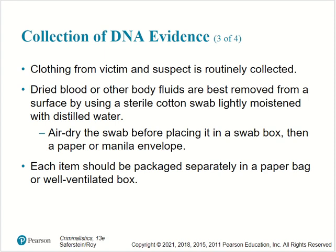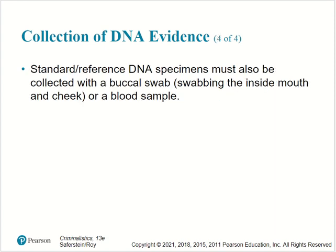Clothing from victims and suspects is routinely collected. Dried blood and other body fluids are best removed from a surface by using a sterile cotton swab lightly moistened with distilled water. Air dry the swab before placing it in a swab box, then a paper or manila envelope. Each item should be packaged separately in a paper bag or well-ventilated box. Standard and reference DNA specimens must also be collected with a buccal swab — swabbing the inside of the mouth and cheek — or a blood sample.